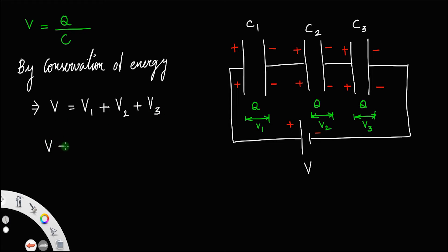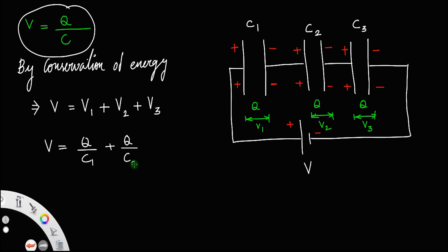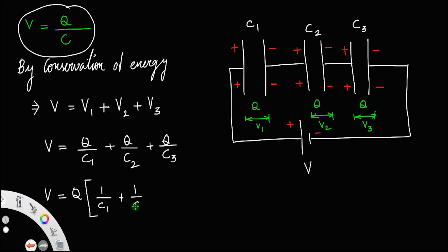So V will be: V1 is equal to Q by C1, V2 is equal to Q by C2, and V3 is equal to Q by C3, using the relation potential equals charge by capacitance. So V equals Q divided by C1 plus Q divided by C2 plus Q divided by C3. Taking Q outside, V equals Q times (1/C1 + 1/C2 + 1/C3). Let us call this equation number 1.